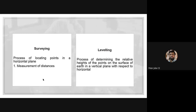There is a difference between surveying and leveling. Surveying is the process of locating points in a horizontal plane — it is basically the measurement of distances in the horizontal plane. Leveling is the process of determining the relative height of points on the surface of the earth in a vertical plane with respect to horizontal. So surveying takes measurements in the horizontal plane, while leveling takes measurements in the vertical plane.